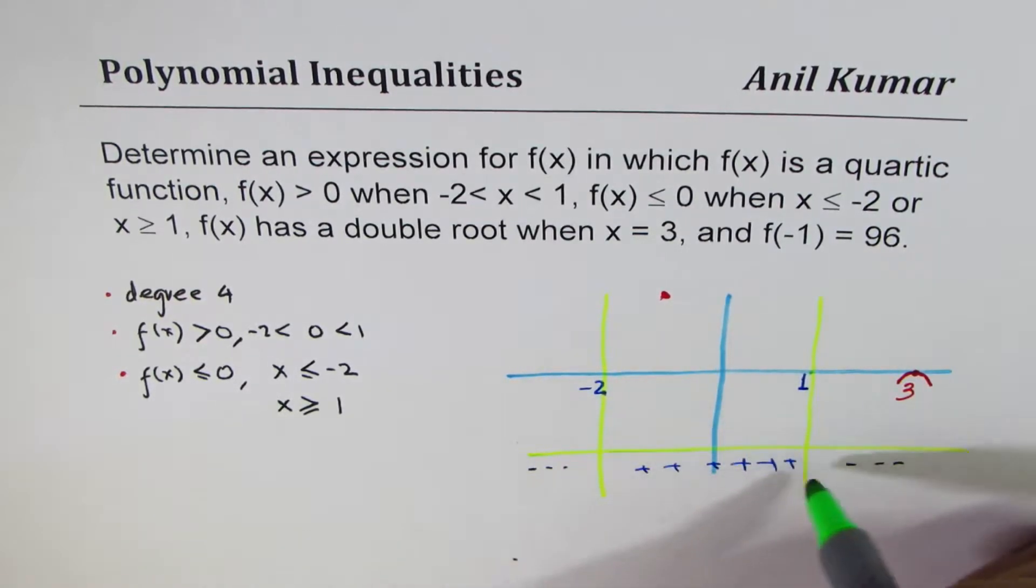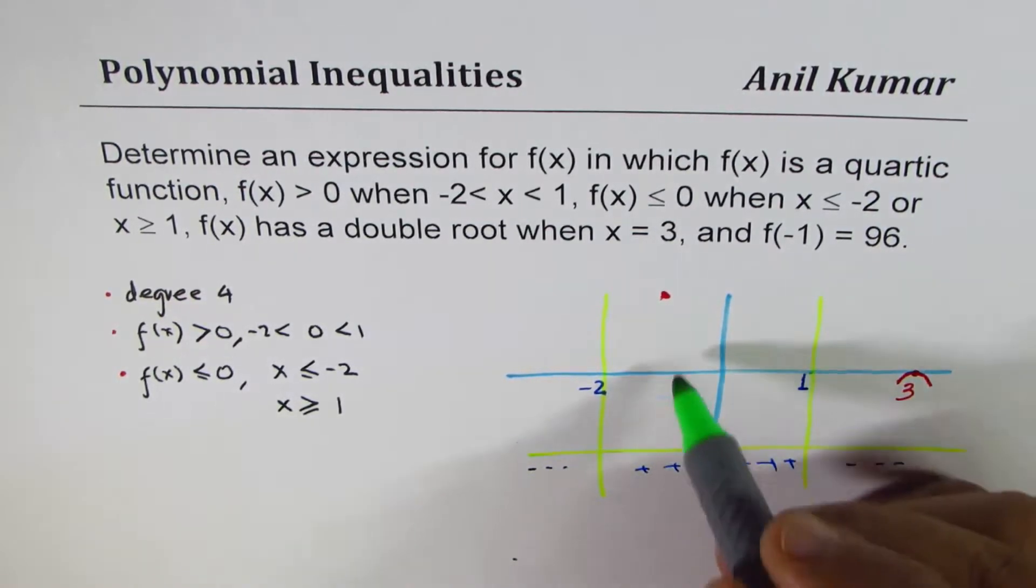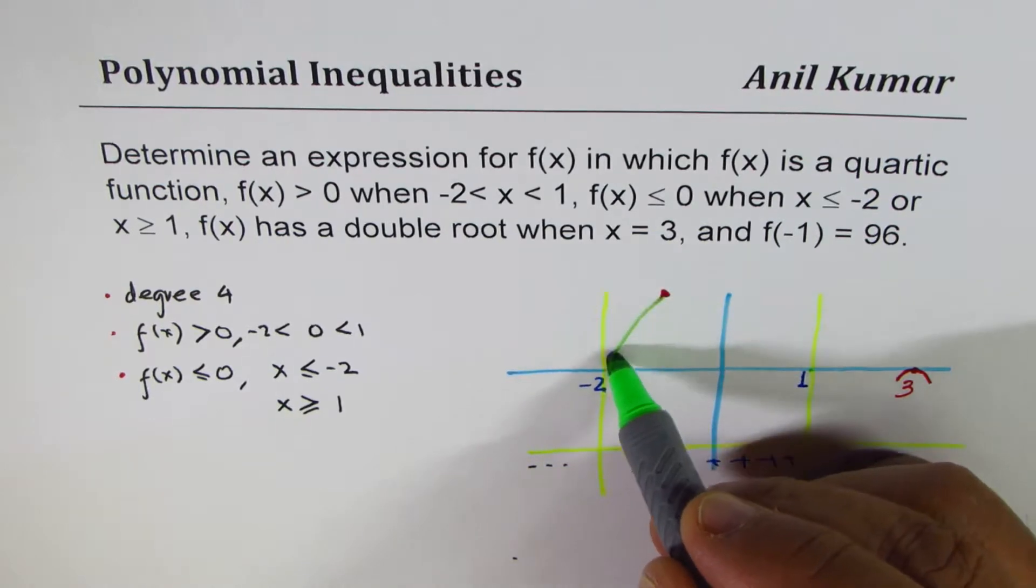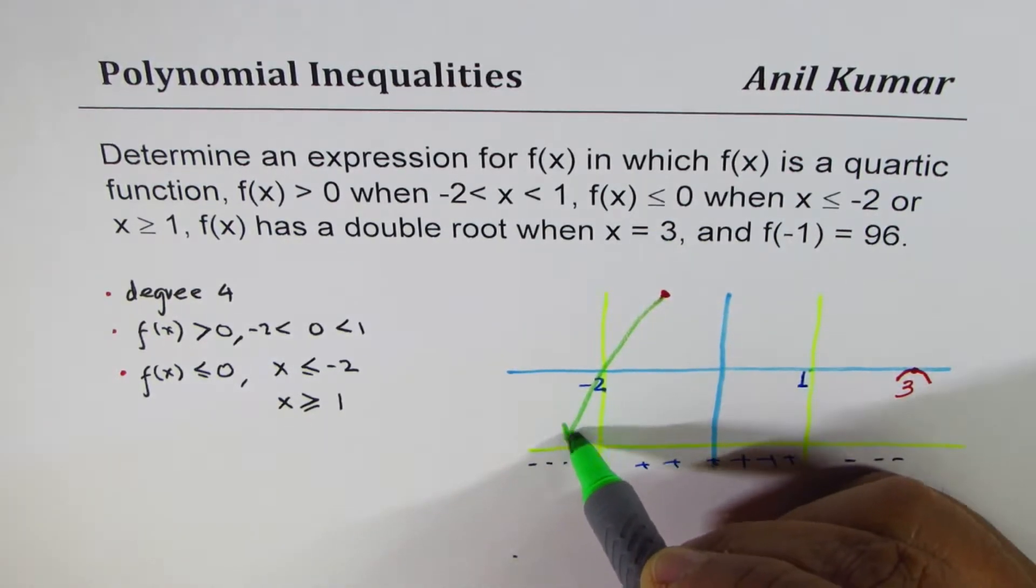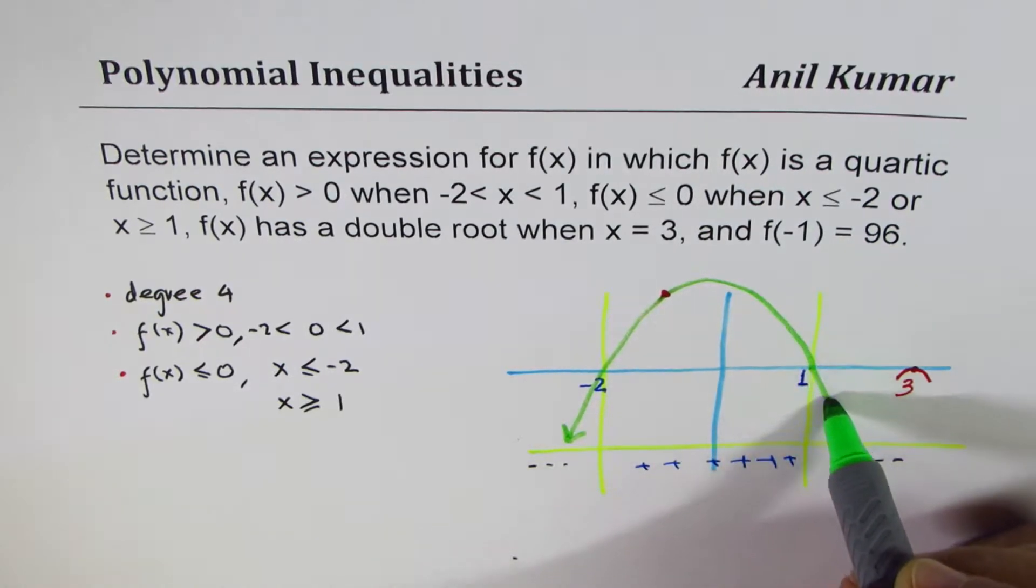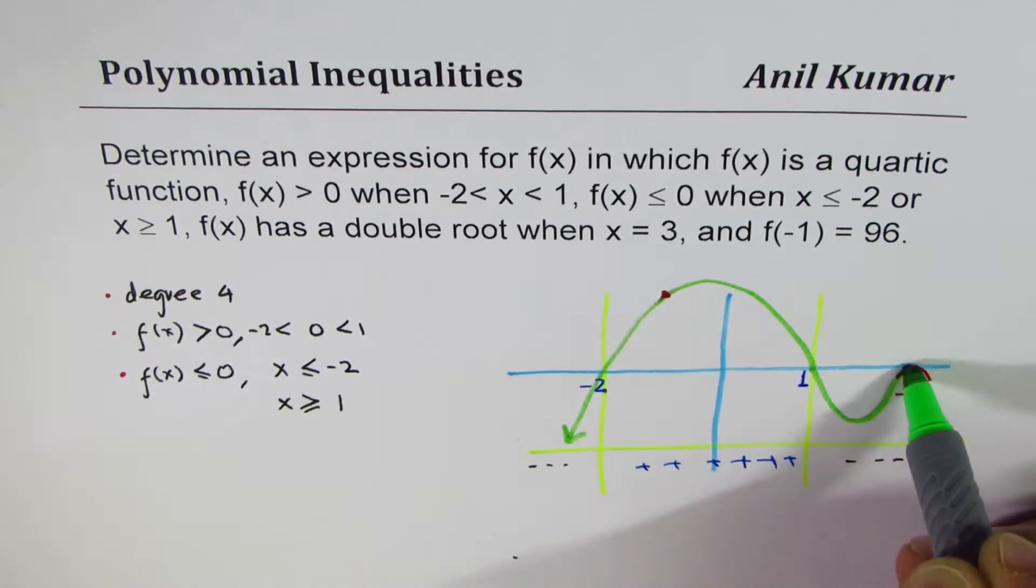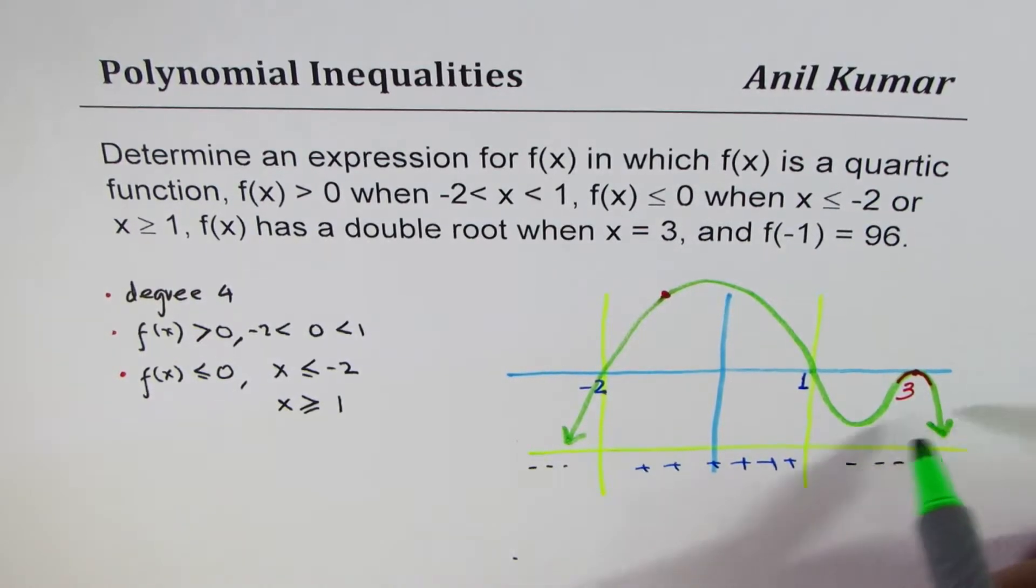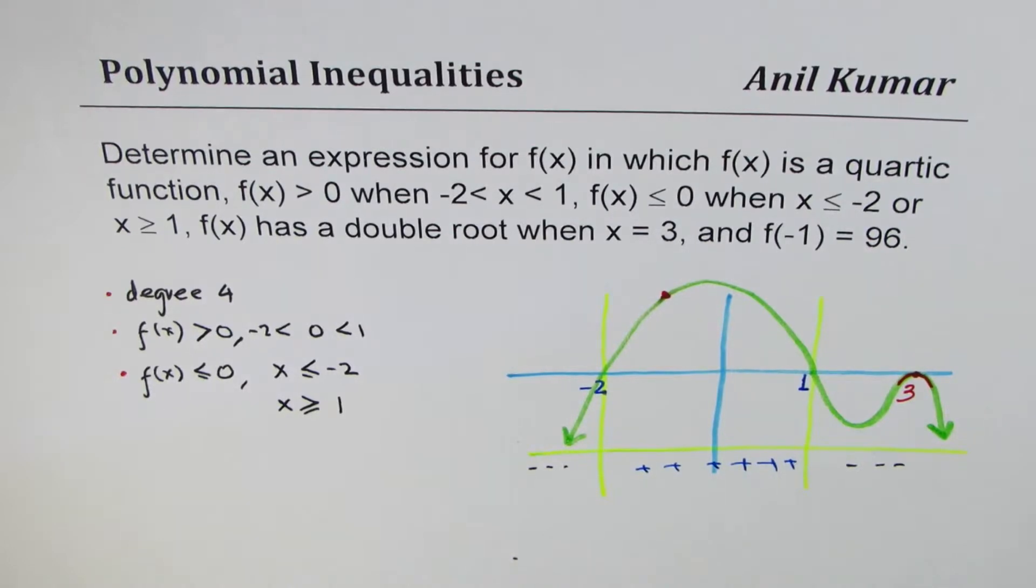Since we need this portion to be positive, what we could do here is that we could just go through this. Do you see that? And we could just go like this and cross that one. Is that okay? And go like this, turn and go like this. Now, if I make a graph like this, it looks like a graph for a quartic function.